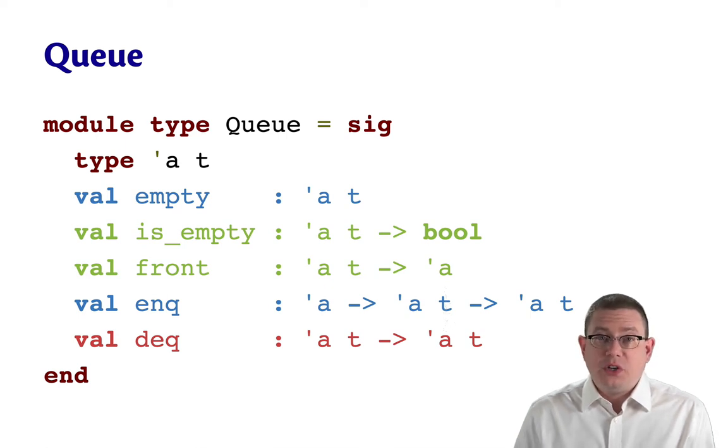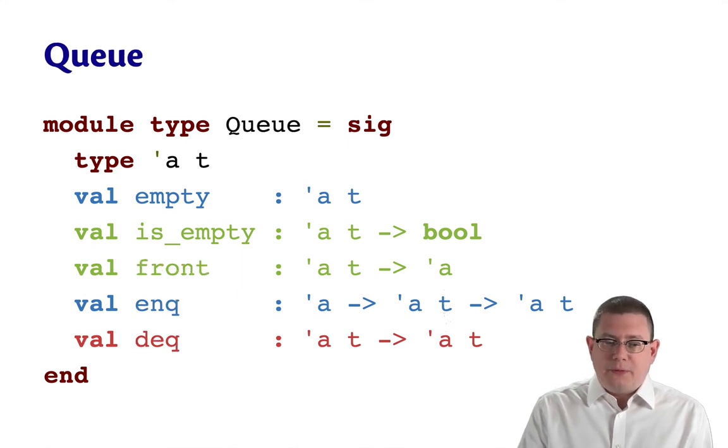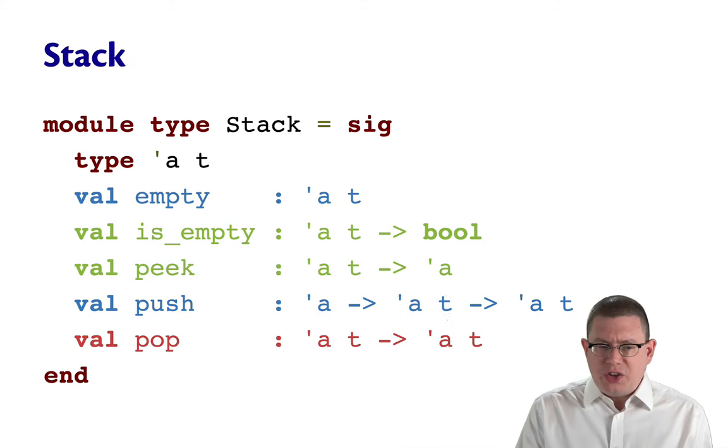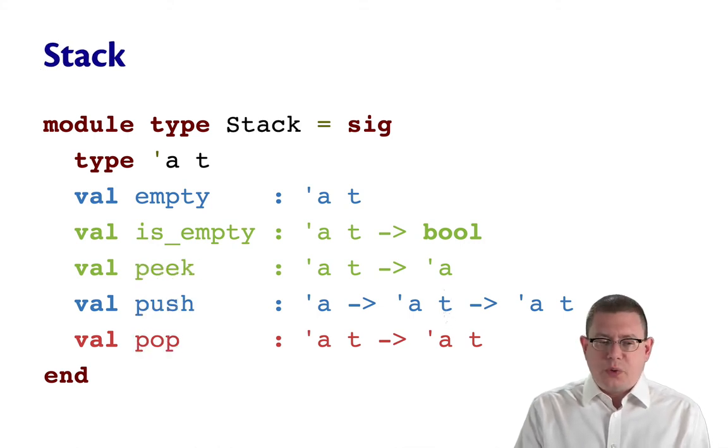As another example of equational specification, let's look at our old friend, the queue. Here's the specification for queues, and actually here's the specification for stacks once again. Notice if I flip back and forth between these really quickly, the only thing that's changing is some identifiers here, just the names of the module and the operations. All of the types stay the same.